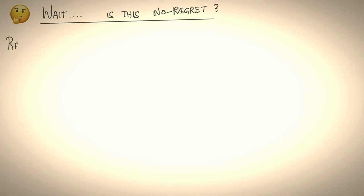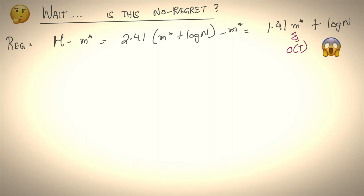Now you may notice something upsetting. Is this algorithm, weighted majority, a no regret algorithm? Hmm, let's take a look. So what is regret? Recall regret is simply m, the number of mistakes the learner makes minus m star. If we plug in that expression, we get 1.41 times m star plus log of n. But wait, m star, which is the number of mistakes the best expert makes, could be order of t. And so the regret could also scale in order of t, which means this is not a no regret algorithm.